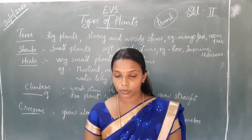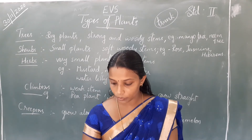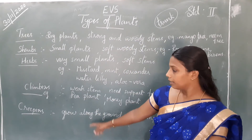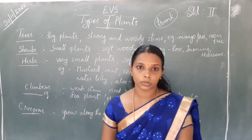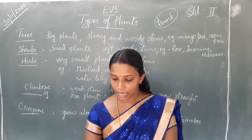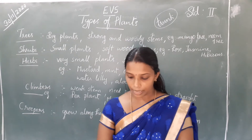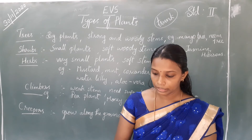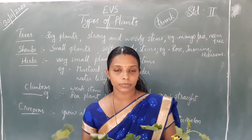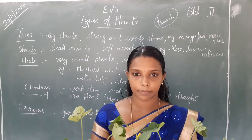The last type is creepers. Creepers grow along the ground and cannot stand straight because they have a very weak stem. Examples of creepers are pumpkin, watermelon, and cucumber.